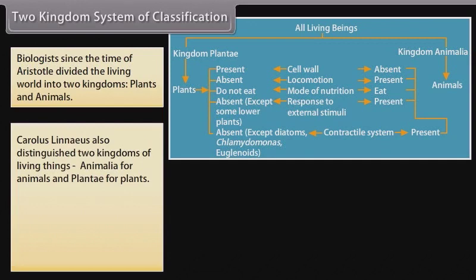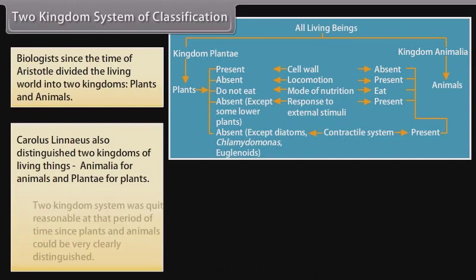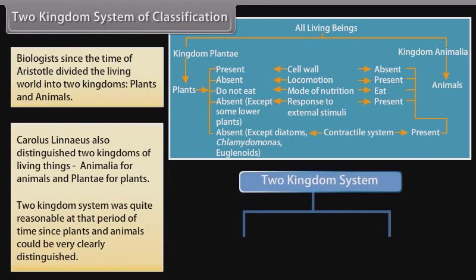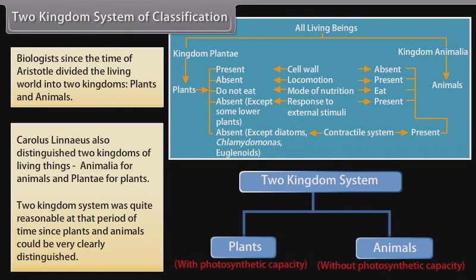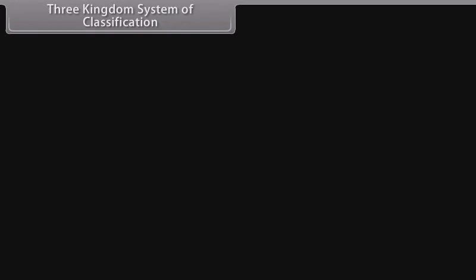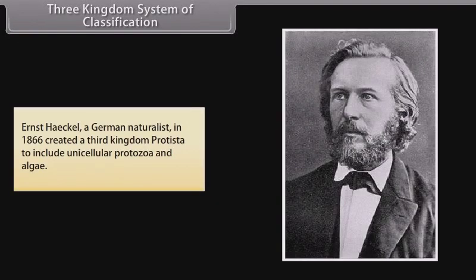Three kingdom system created a third kingdom, Protista, to include unicellular protozoa and algae.